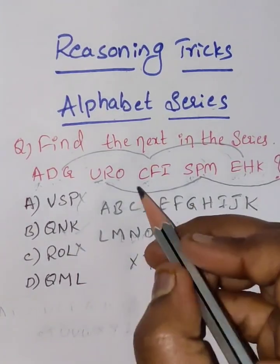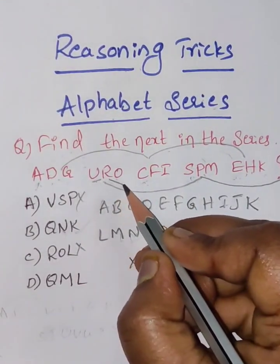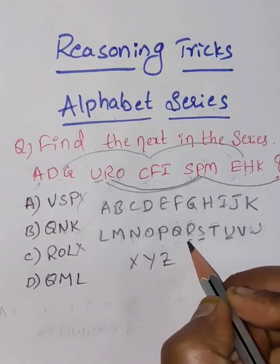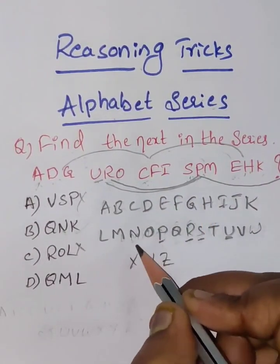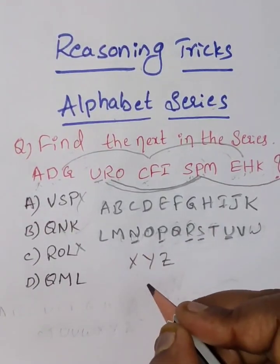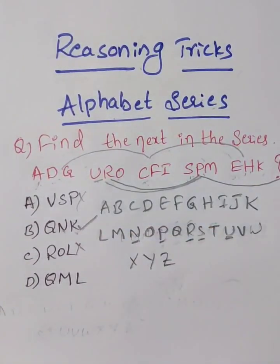See here the next letter R. Next we are getting P. So R, P, Q is missing. Next P, O should miss and the next will be N. So we can say B is our answer.